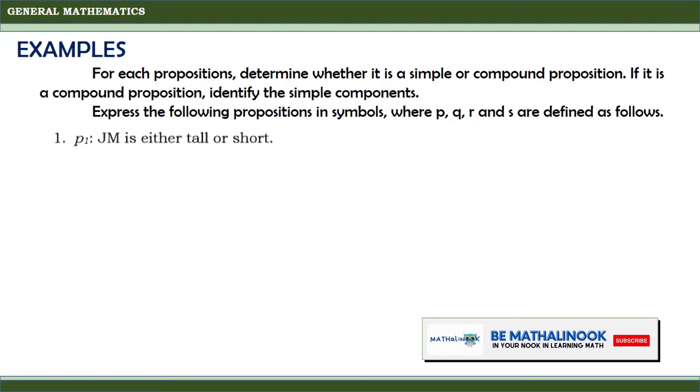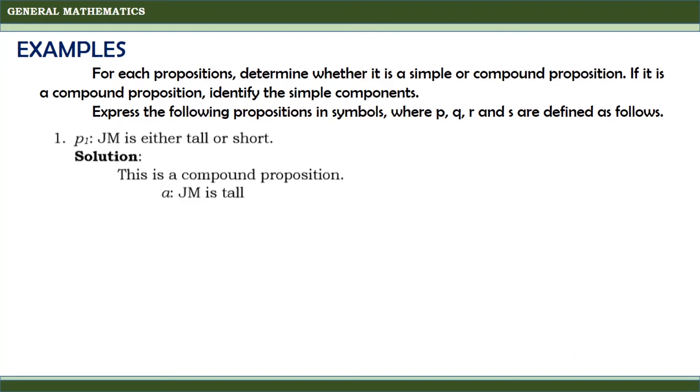Proposition P: J-M is either tall or short. This is a compound proposition. The first proposition is J-M is tall, which can be represented by A. And the second proposition is J-M is short. The proposition P can be represented by A or B. So, it is a combination of two propositions. Combining Proposition A and Proposition B with a logical connector or, it will become a compound proposition P: J-M is either tall or short.